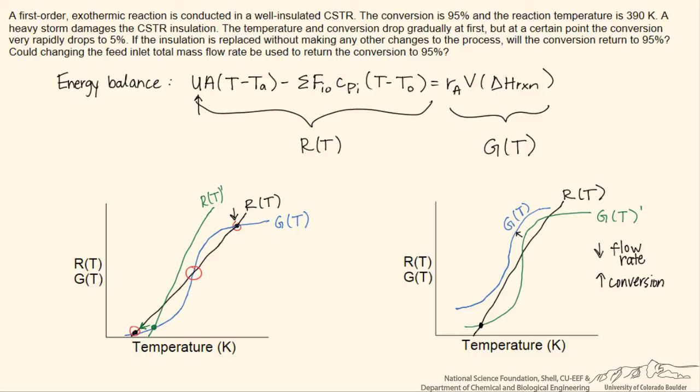Then if we wanted, we could return to the operation shown by the green curve by decreasing the flow rate again. But since we'll have already ignited the reactor, then we would expect to achieve a steady state that would be indicated by this higher intersection point.